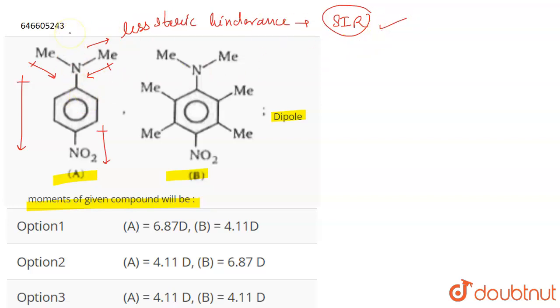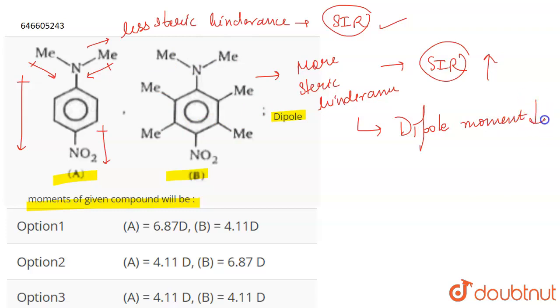Whereas if you talk about B, compound B, there is a very large amount of steric hindrance. There is more steric hindrance, or you can say that SIR is going to be more. So due to more steric hindrance, the dipole moment is going to be less because the resonance will not be effective.